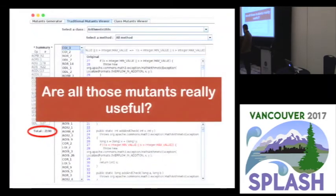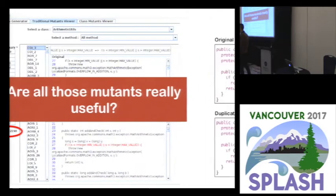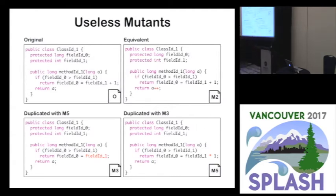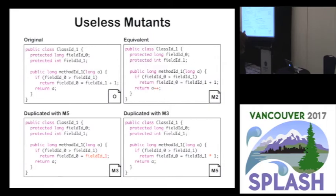Our first question was: are all those mutants really useful? We had situations like this — we have an original program and three mutants. M2 has a post increment on the A variable. It's a common mutation operator for imperative languages, but in this case A is a local variable with its last use in this method. So this mutant does not change the behavior of the program. We say it's equivalent to the original program. We cannot create a test to kill this mutant, so it's useless.